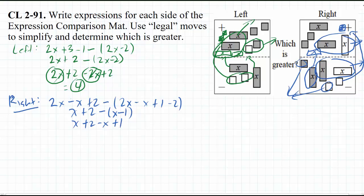And then we notice we have the zero pair here. That's going away. And then we have 1, 2, and 3 left. Okay, so this x and negative x went away, and then 2 plus 1, which is 3 left. So the left side is greater.